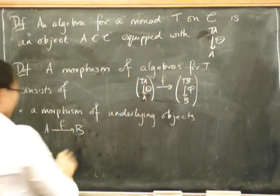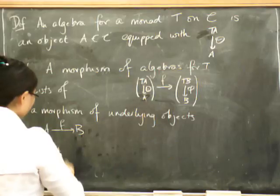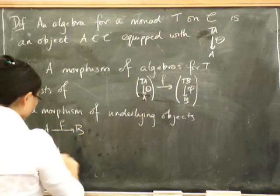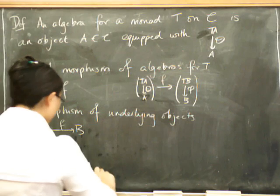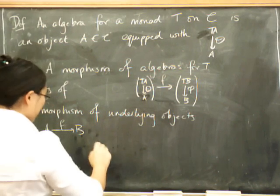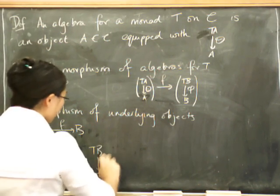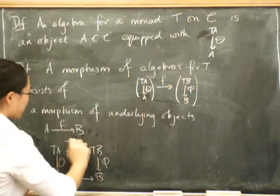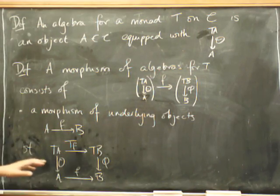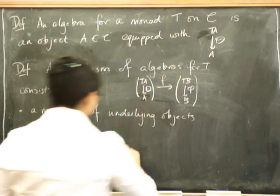So such that the following square commutes. Over here you've got your algebra action. Over here you've got your morphism on underlying objects. And here you've got your other algebra action. What could go up here? T of F. So this diagram has to commute.